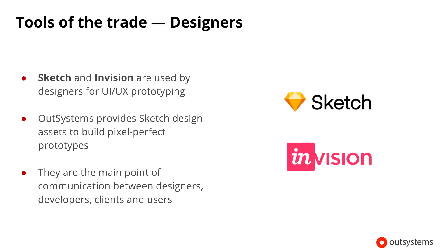Let's also spend a moment talking about other tools that designers and developers may be using during this process. Sketch and Envision are used by designers to create design prototypes and collect user feedback. There are two stages: the first is the low fidelity mock-ups created by the user experience team, and the second is the high fidelity prototypes created by the user interface team. OutSystems provides Sketch design assets to help you build pixel-perfect prototypes, which are the main point of communication between designers, developers, clients, and users of the application.